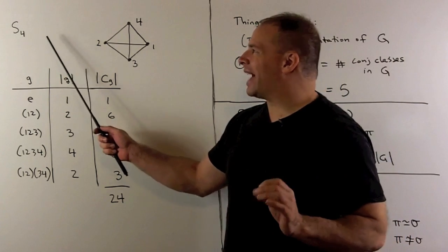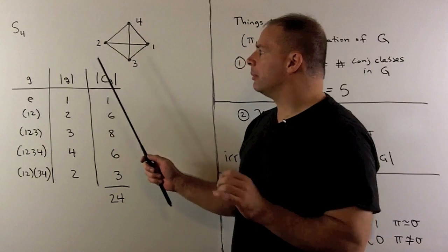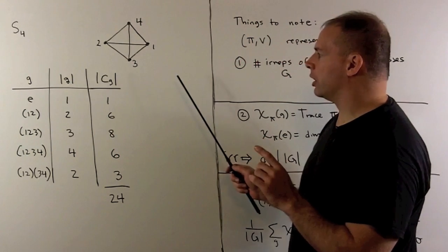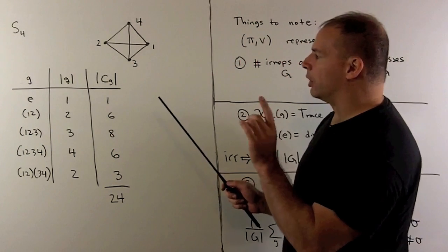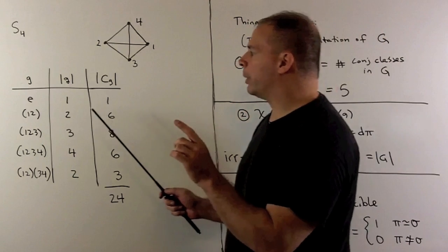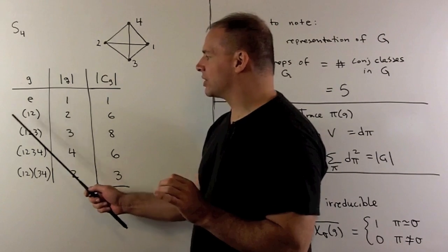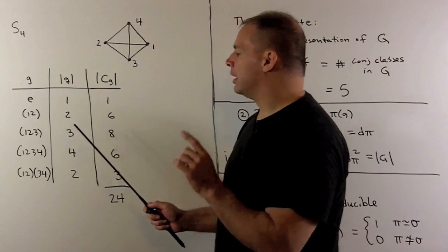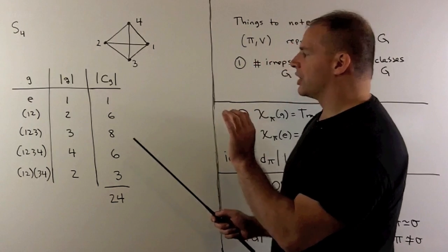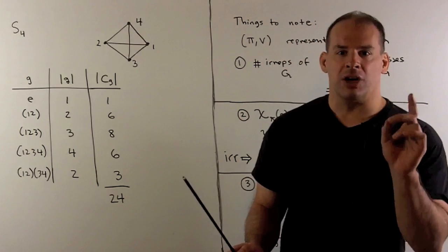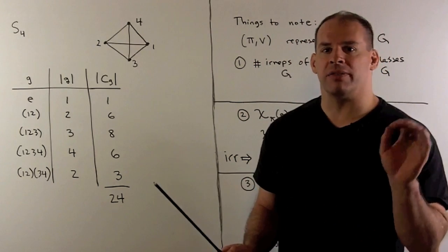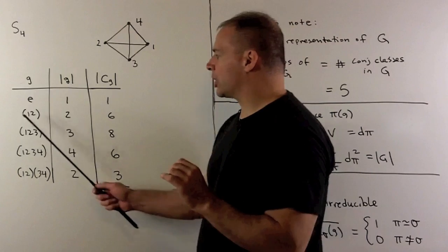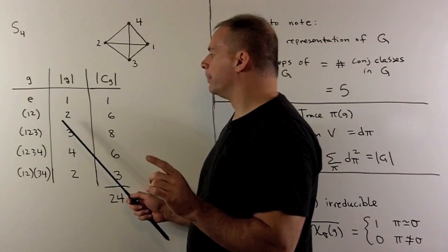Recall, we can realize S4 as symmetries of a regular tetrahedron. If we want to consider group elements, we can represent them in cycle notation. In cycle notation, the conjugacy classes of an element are just going to be given by the cycle structure of that element.